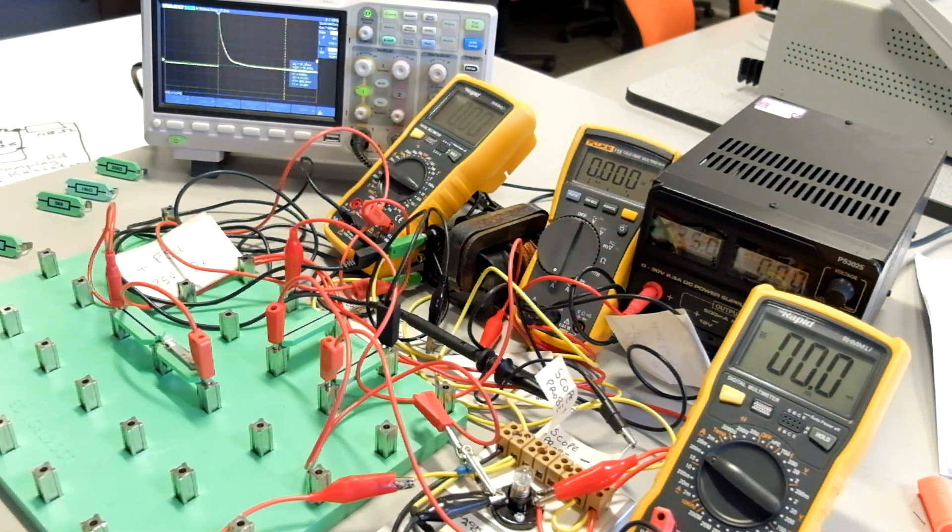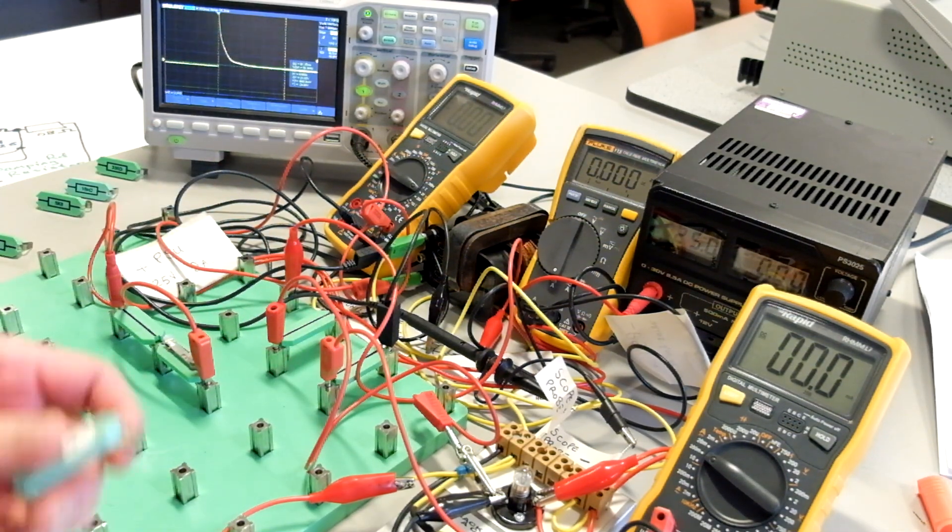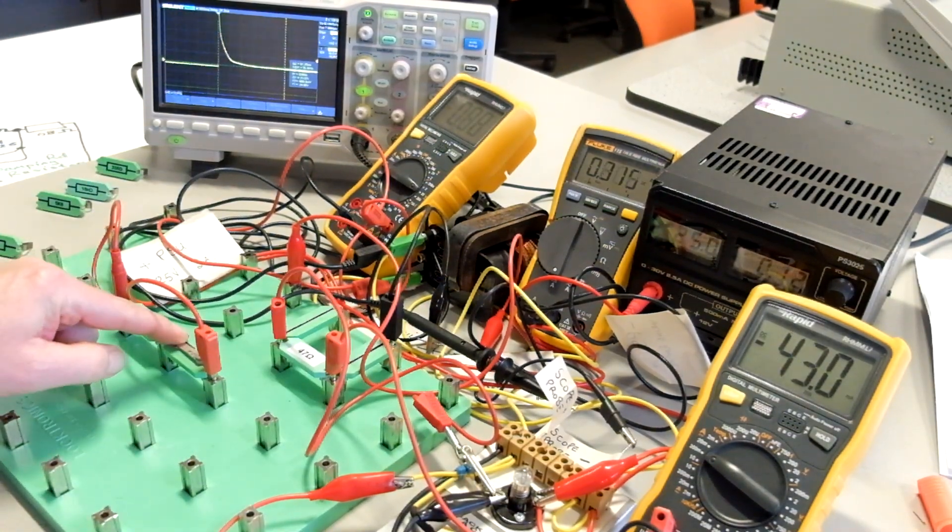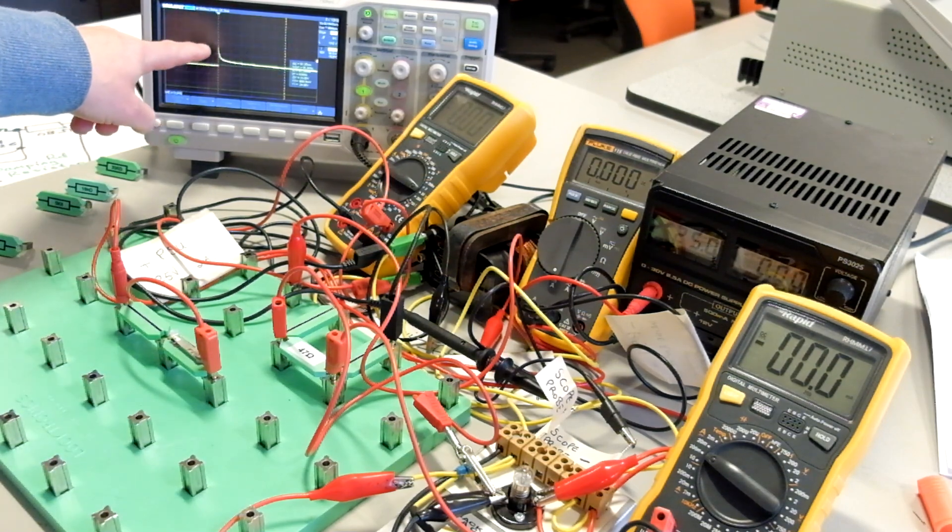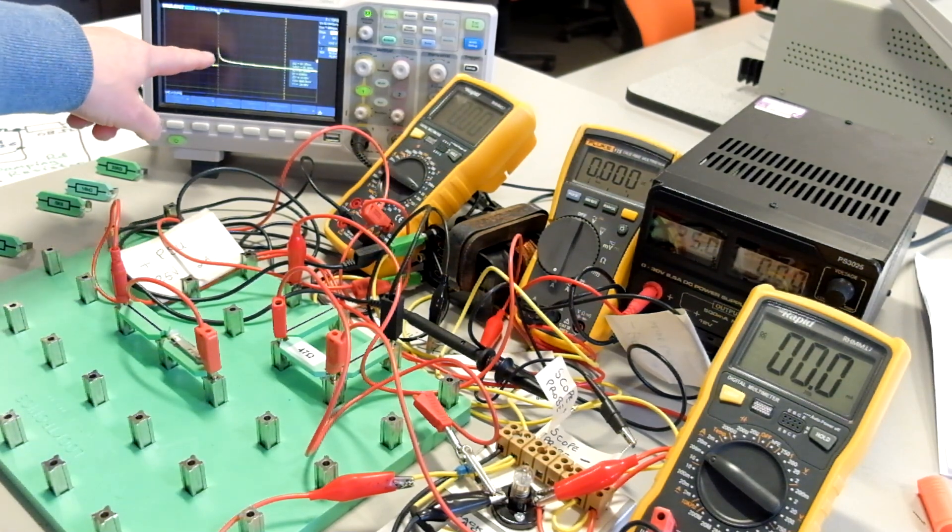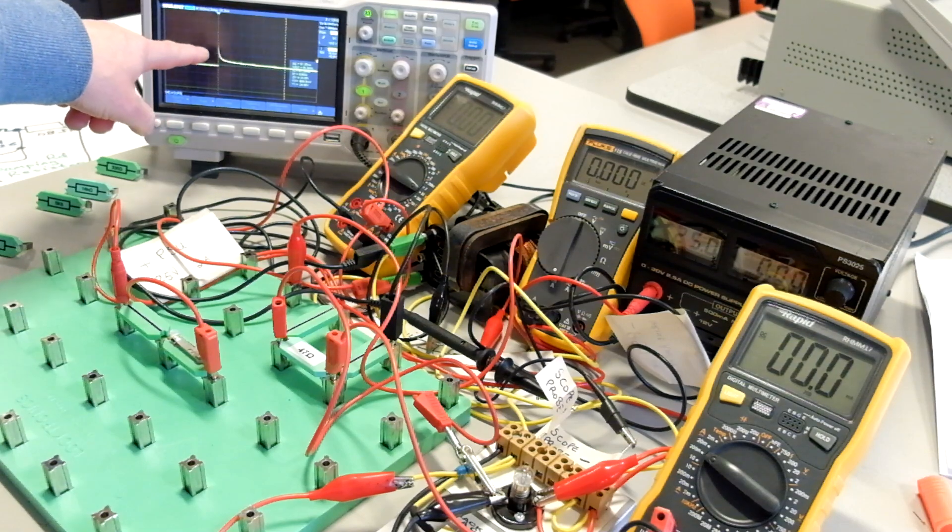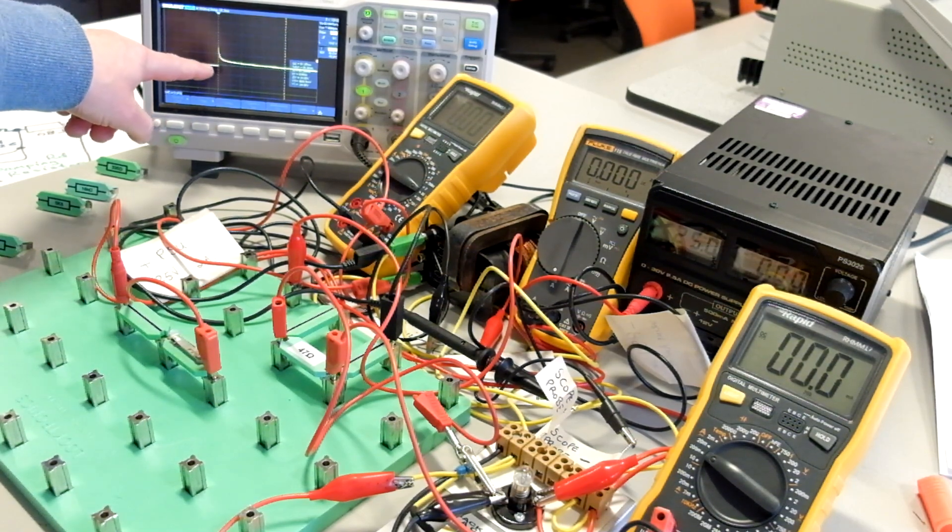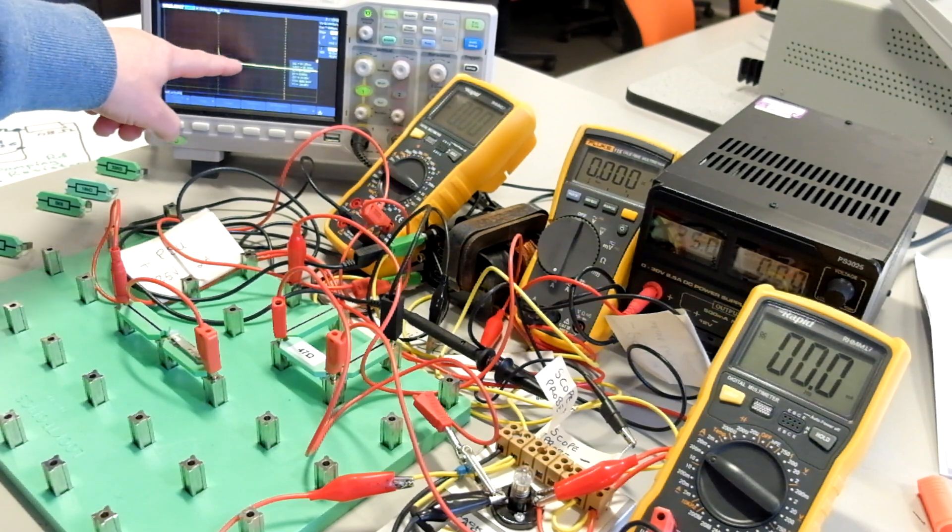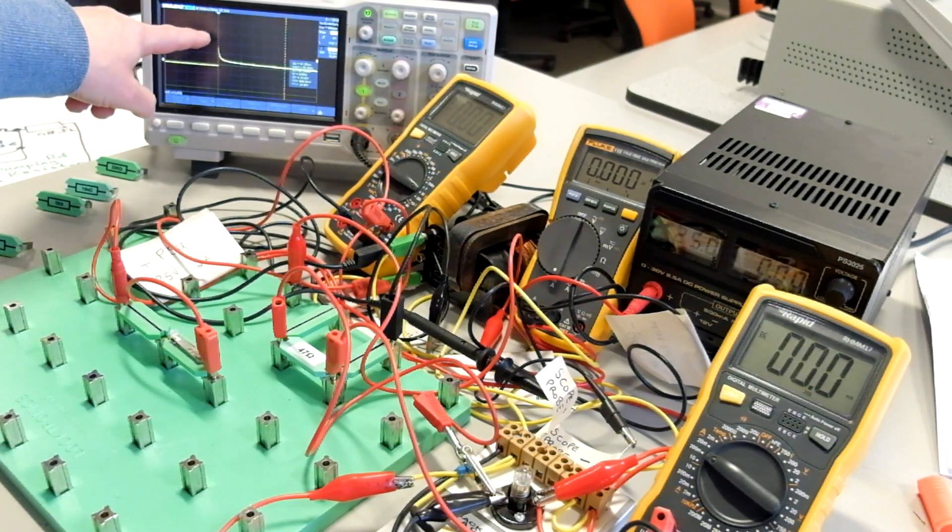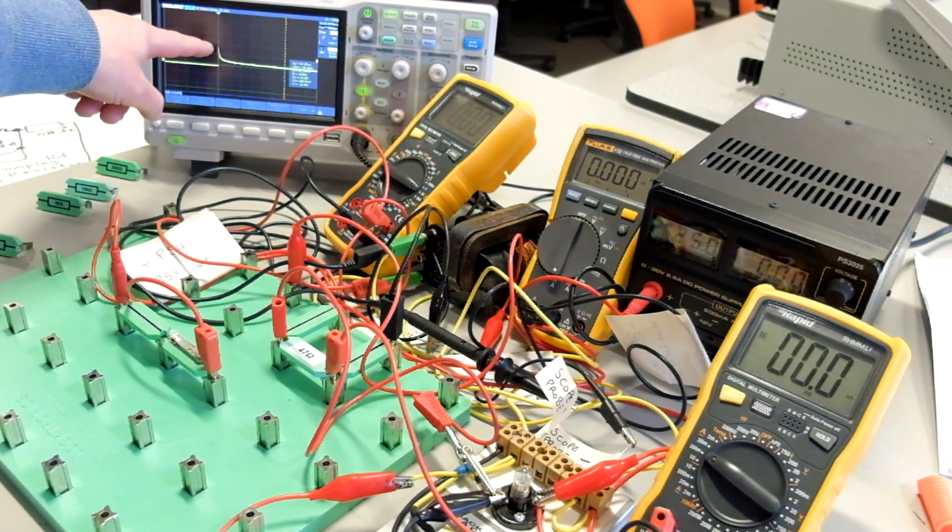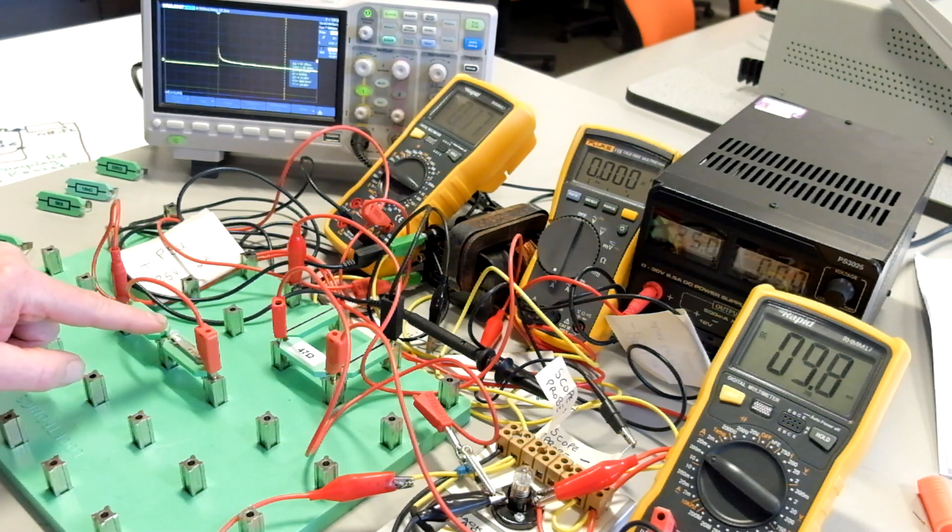So if we reduce that down even more, let's take it down to 47 ohms, then we reduce the voltage even smaller. So now with 47 ohms across the 6 ohm coil, we've now got the voltage down. It's only really, that's 10 volts per division, we've got it down to less than a 20 volt back EMF spike on it.